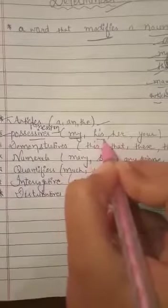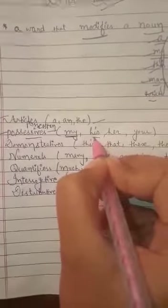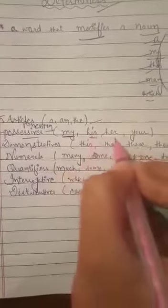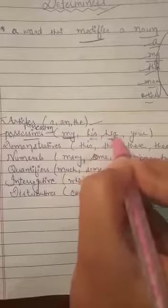So here we talk about the types of determiners. First is articles which are a, an, and the. Possessives, possessives are the words which show the possession, which show who is the owner of any noun. If there is a house, if I possess that house I will say that is my house. If there is a book and if any boy possesses the book I will say this is his book. If any girl possesses the book then I'll say it is her book.